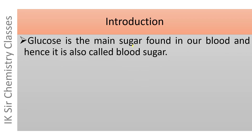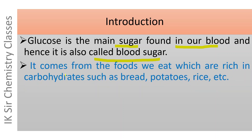Glucose is the main sugar found in our blood and hence it is also called blood sugar. It comes from the foods we eat, which are rich in carbohydrates, such as bread, potatoes, rice, etc.